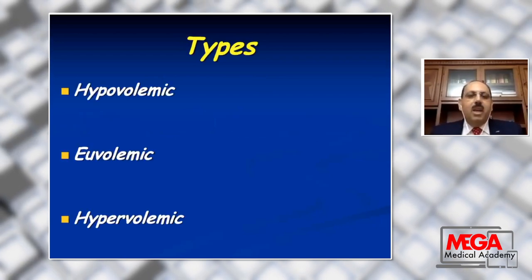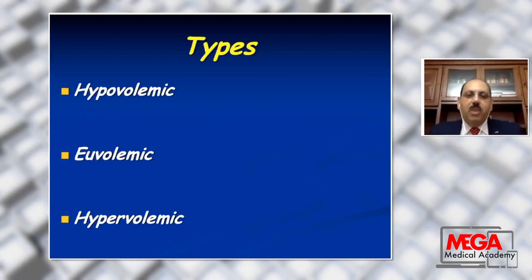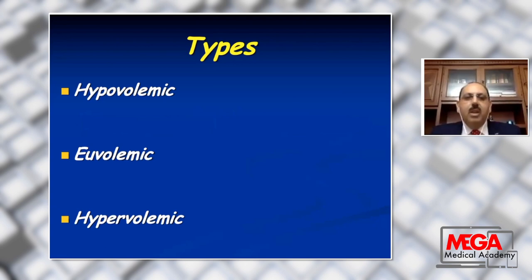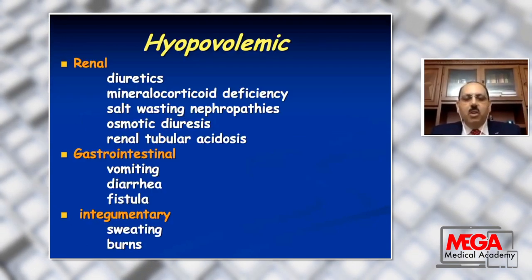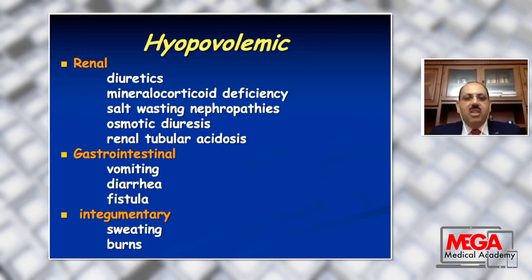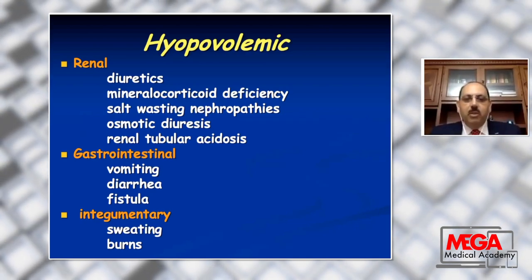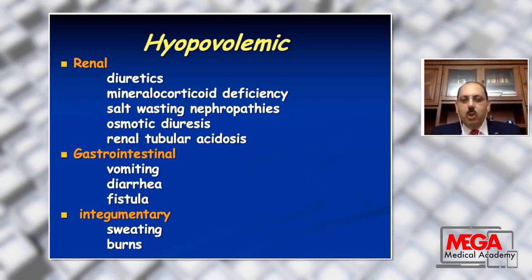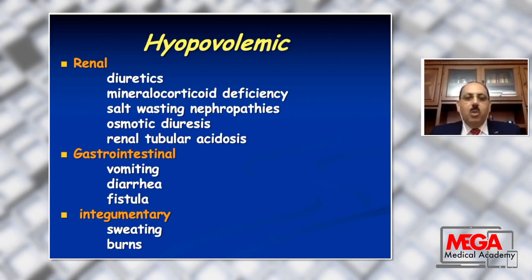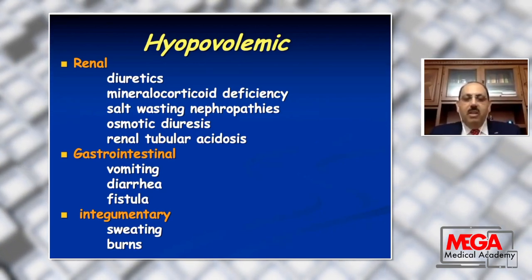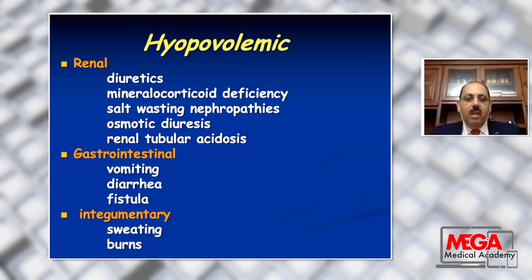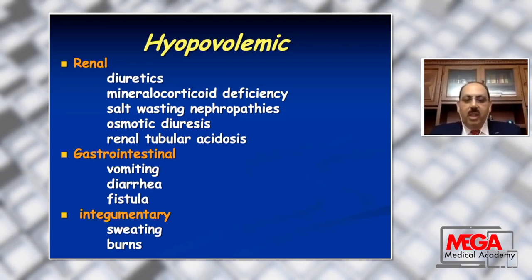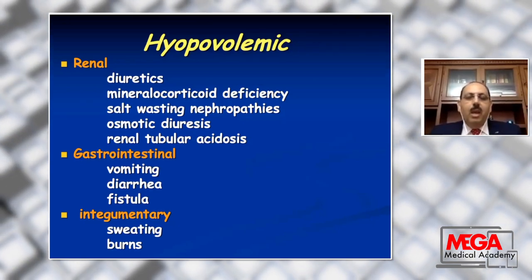Starting with hyposmolar hyponatremia, the types according to the volume status of the patient can be classified as hypovolemic, euvolemic, or hypervolemic. Hypovolemic hyponatremia means there is a loss of water and sodium, either through the kidney by the effect of diuretics, mineralocorticoid deficiency, salt-wasting nephropathy, osmotic diuresis and renal tubular acidosis, or losses through the gastrointestinal tract in case of vomiting, diarrhea, and gastrointestinal fistula, or through the skin in sweating and burns.